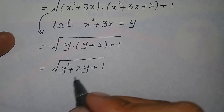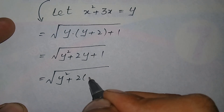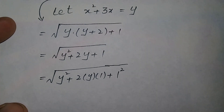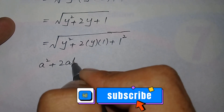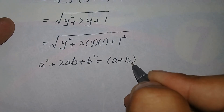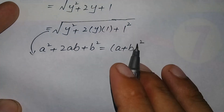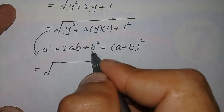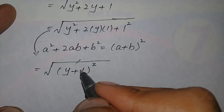We can also write this expression as square root of y² + 2 times y times 1 + 1², which we recognize as the algebraic identity a² + 2ab + b² equals (a + b)². Using this identity, replacing a with y and b with 1, it becomes square root of (y + 1)². The square and the square root cancel each other, leaving just y + 1.